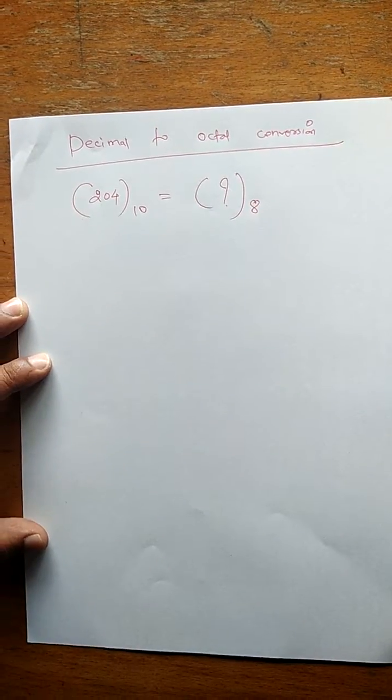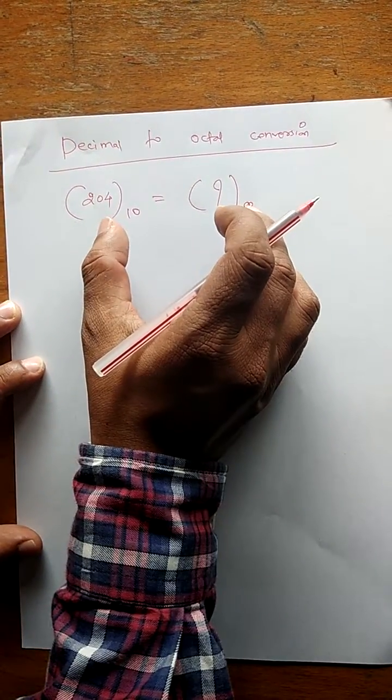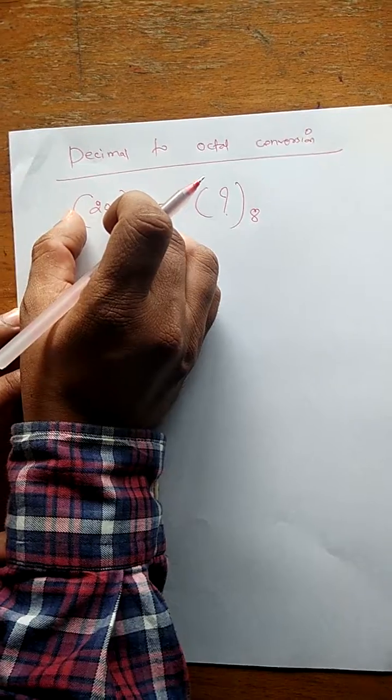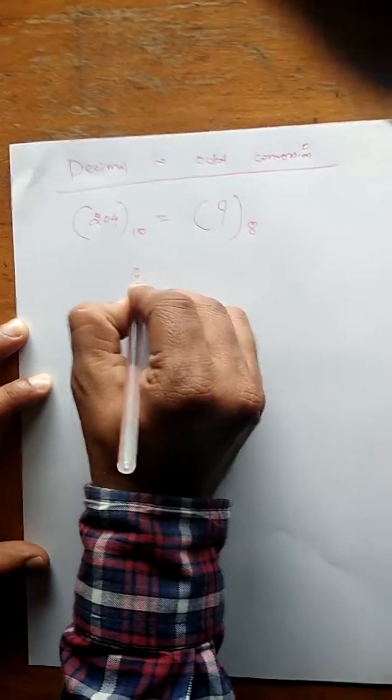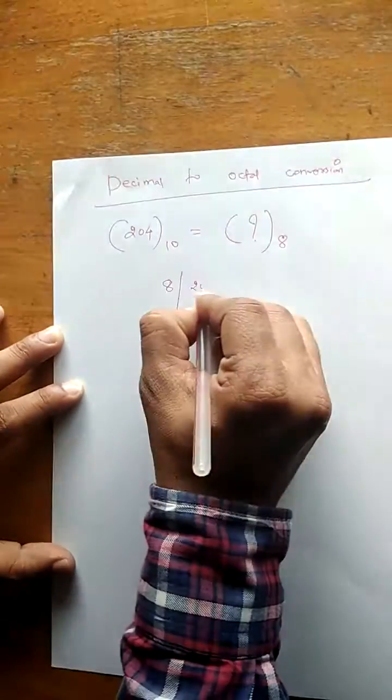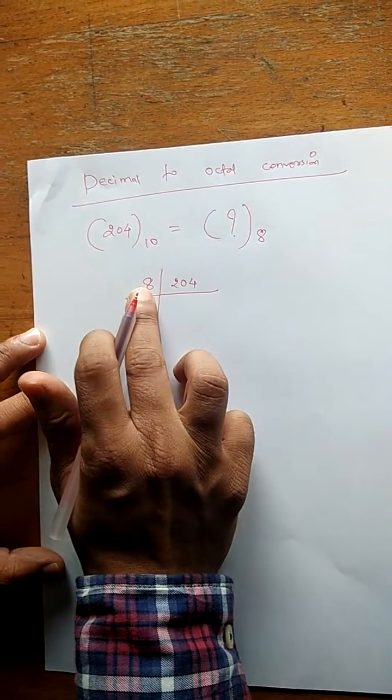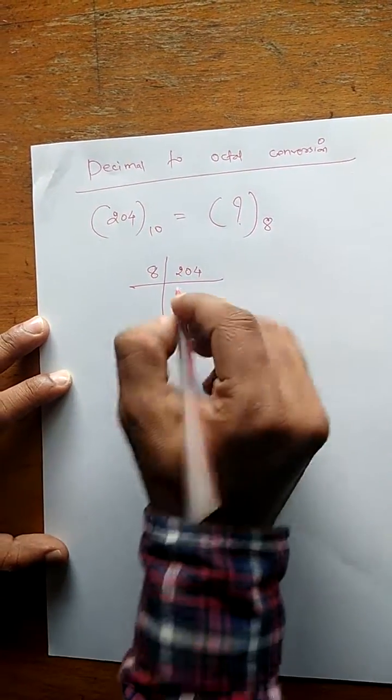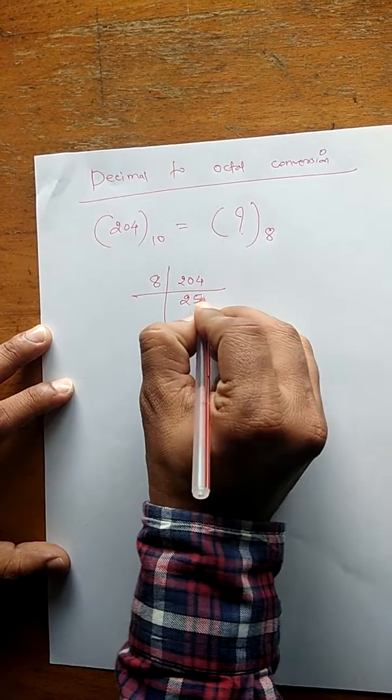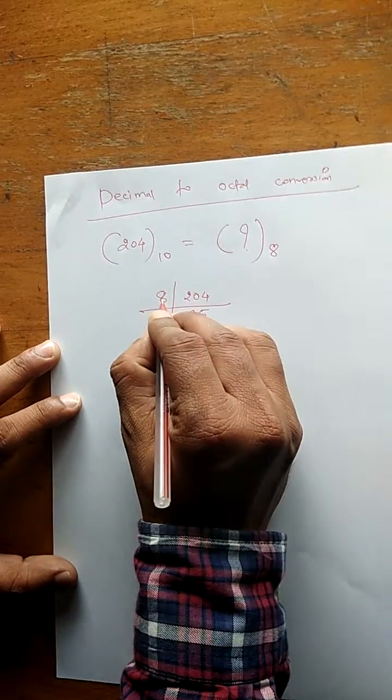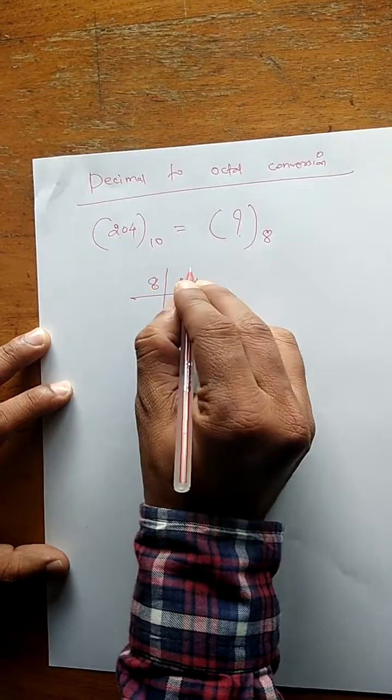So first step: 8 and 204. If I write 25 over here, that means 25 into 8 is equal to 200, which is nearer to 204. So in that case, the remainder will be 4. Next line, I will write 8 again.